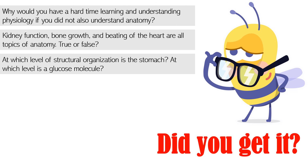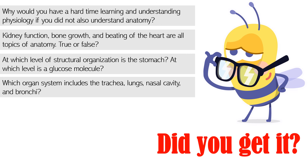Next question: At which level of structural organization is the stomach? At which level is a glucose molecule? The stomach exhibits the organ level of structural organization, and glucose is at the chemical level. Which organ system includes the trachea, lungs, nasal cavity, and bronchi? These are all organs of the respiratory system.